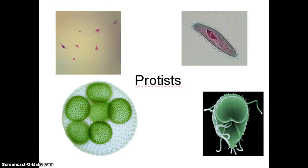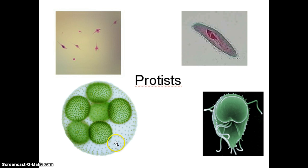Hi guys, here we go with protists. Today we're really just going to focus in on the animal-like protists, and we'll do the fungus and plant-like protists with another video. We can see some pictures of protists that you might have actually seen when you did your microscope slides. This is a slide of dinoflagellates, this is a paramecium, here is volvox — volvox contains chlorophyll so it's a plant-like protist and shows up green unless dyed red. And this is giardia.